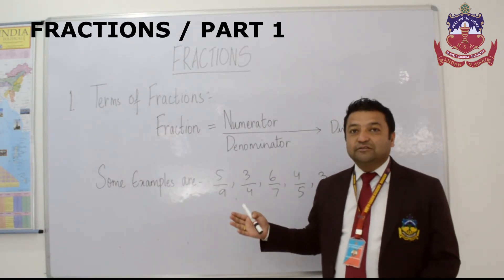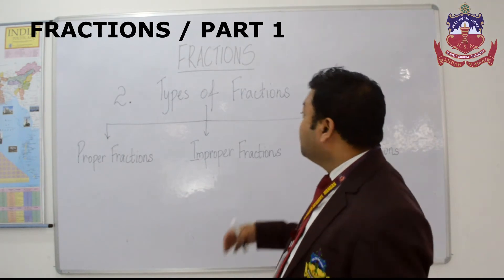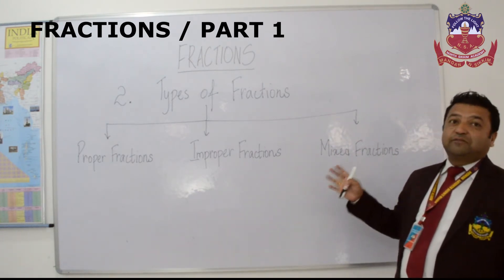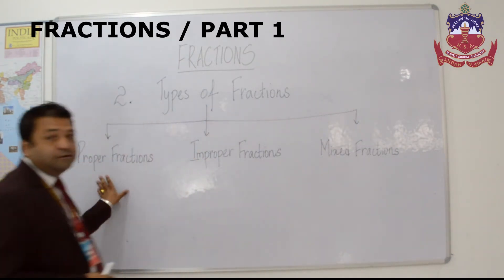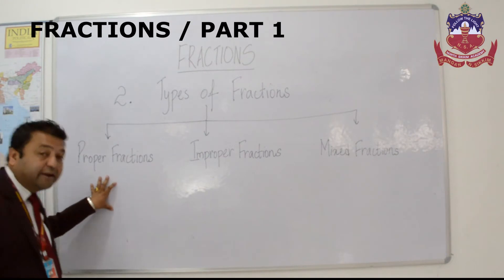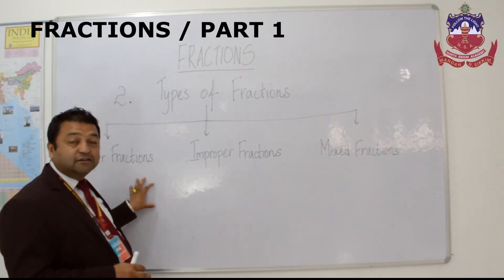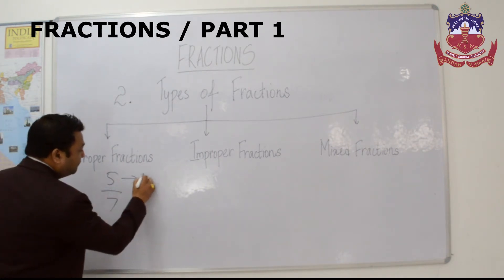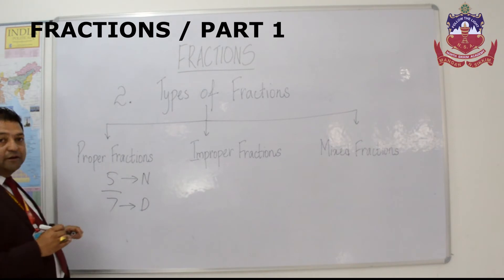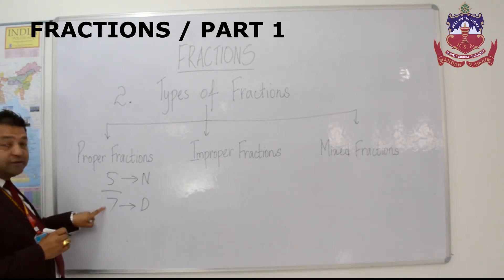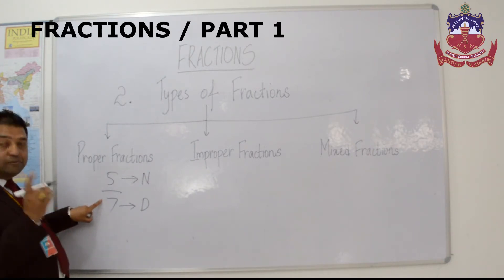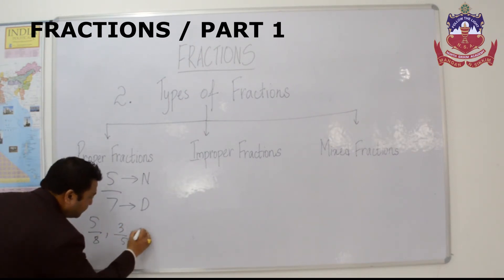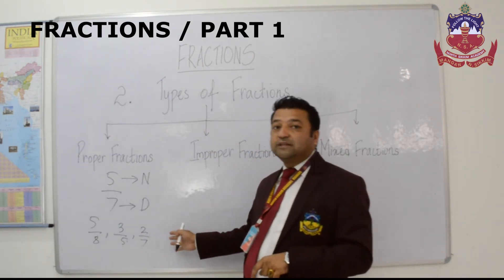Now let us learn more about the types of fractions — that is, proper fraction, improper fraction, and mixed fraction. These are very important fractions. Proper fraction: these type of fractions are fractions when the numerator is smaller than the denominator. You can observe this number carefully — 5 is the numerator and 7 is the denominator. Since 5 is smaller than 7, this type of fraction is called proper fraction. These are the examples of proper fraction.